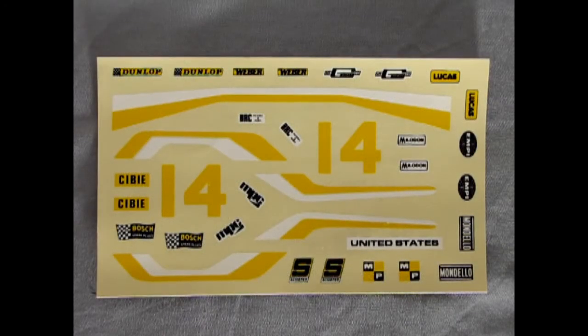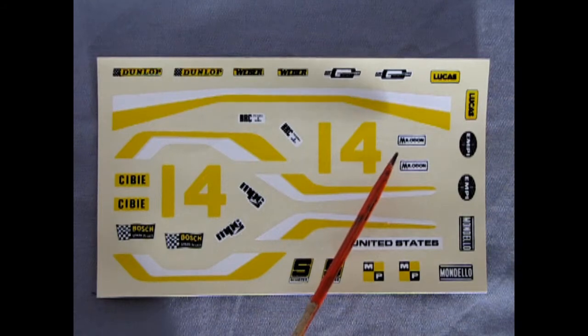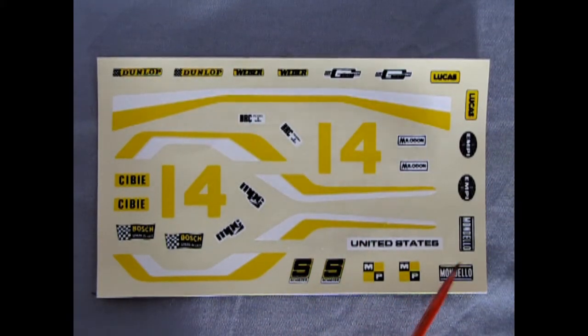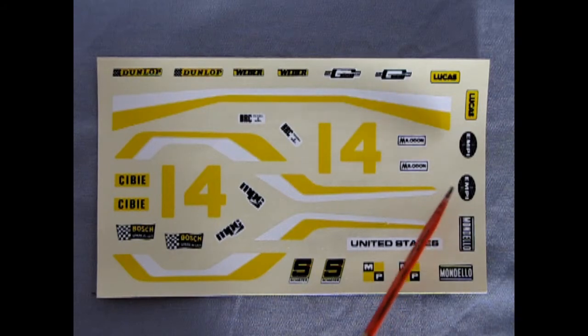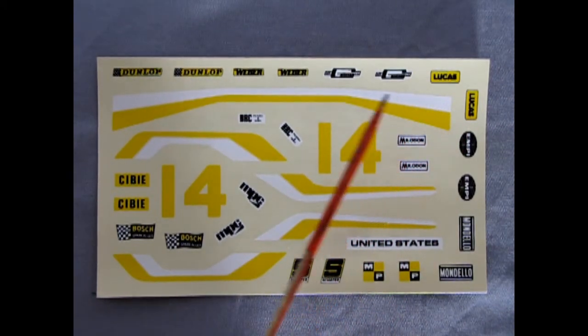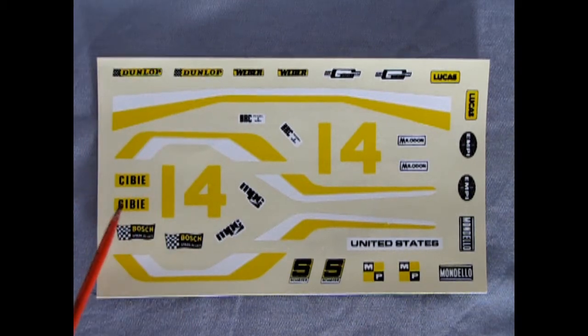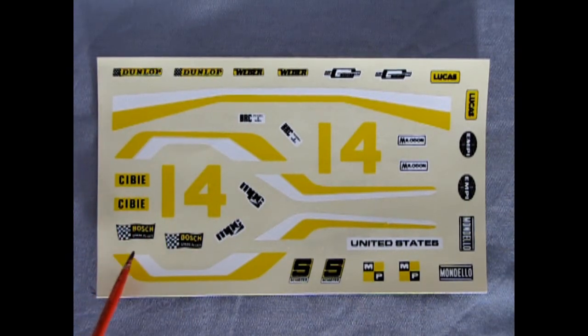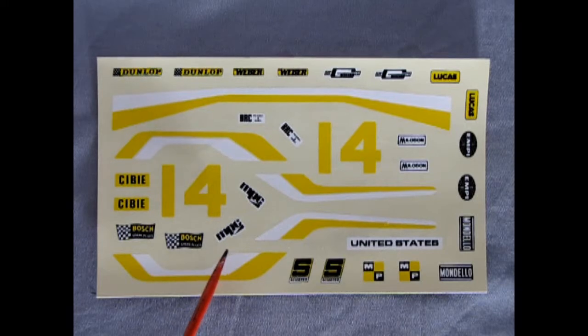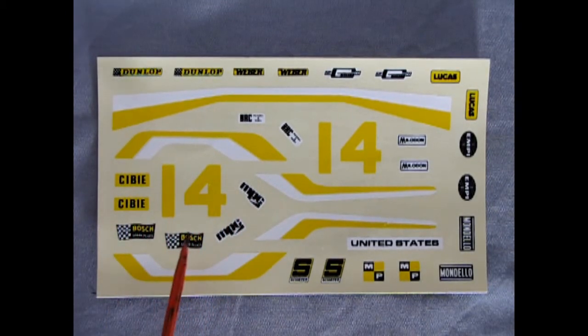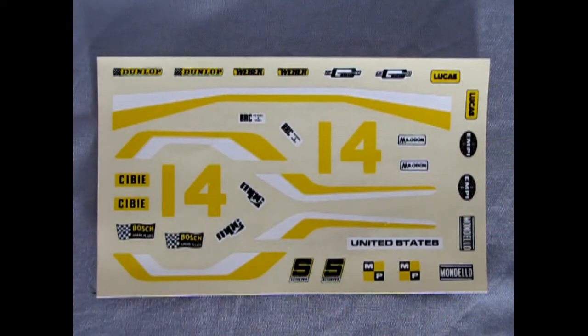So here we have our rally decals. And we've got a cool company. Melodon on here. And we've got Schieffer, MP, Mondello. There's the EMPI, Fair Racing in Europe. Lucas is our headlight. We've got Mr. Gasket Company, Weber, Dunlop tires, CB lights, and Bosch spark plugs. As well as the MPC logo. And you get the cool white and yellow stripes. As well as the number 14 to put on your cool rig.